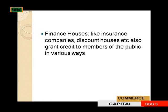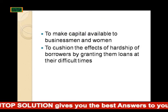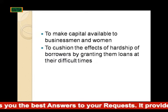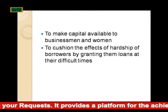We also have finance houses — like insurance companies, discount houses, etc. — which also grant credit to members of the public in various ways. Functions of credit: first, to make goods available on credit to middlemen from manufacturers; second, to make goods available on credit to retailers from wholesalers; third, to make funds available to all eligible borrowers to solve their financial problems.